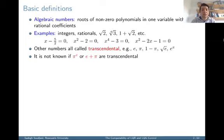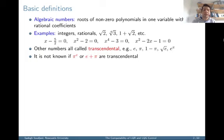Other numbers are called transcendental. Examples of transcendental numbers include the Euler number e and pi, 1 minus pi, square root of e, and so on. In general, establishing whether a number is algebraic or transcendental is a difficult task. For example, we don't know if pi to the power of the Euler number is algebraic or transcendental. We also don't know if e plus pi is algebraic or transcendental.